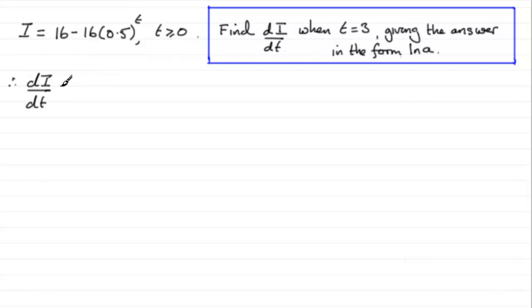Differentiating 16, the constant there, that's going to be 0. But when it comes to differentiating 0.5 to the power t, a constant to the power t, you've got to know a standard result.